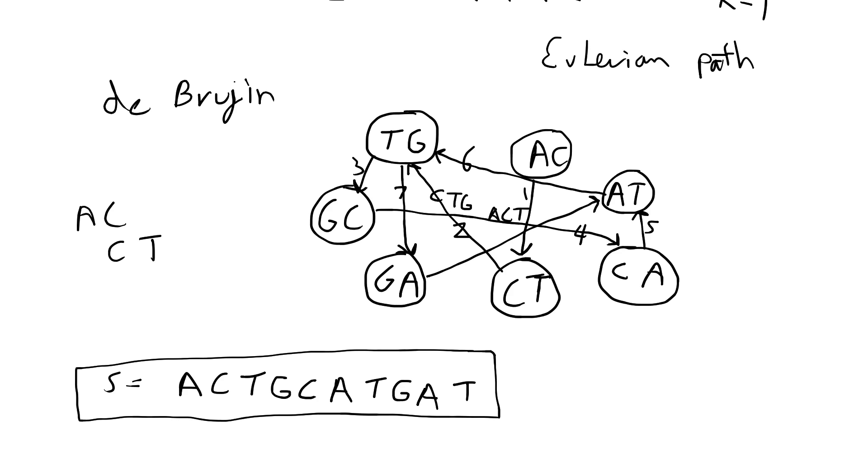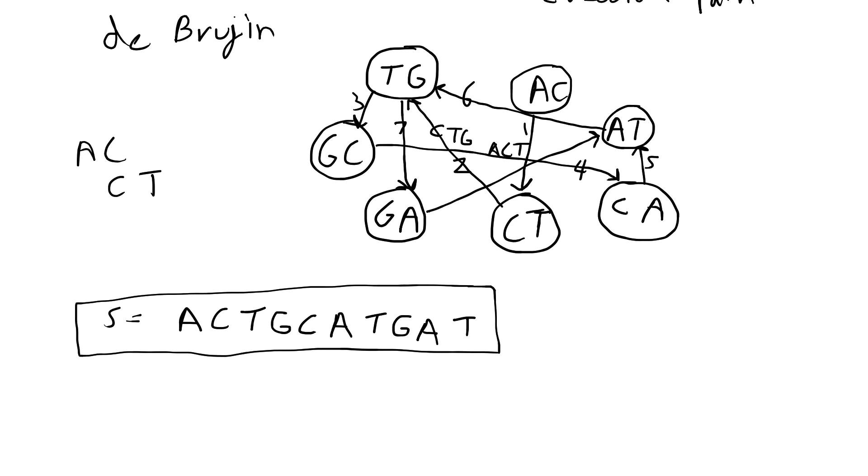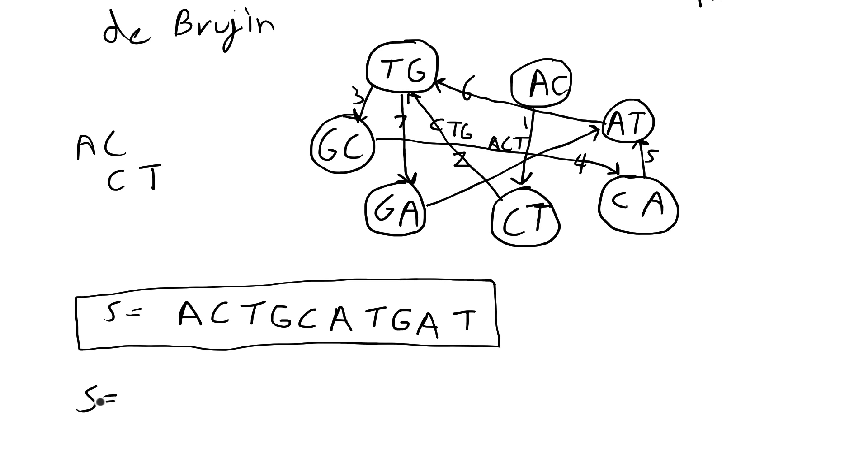In some cases for the DeBruijn graphs, there's more than one possible Eulerian path. So in this case, this is one solution for how the DNA sequence could be. There's also another Eulerian path,